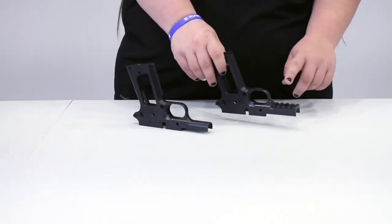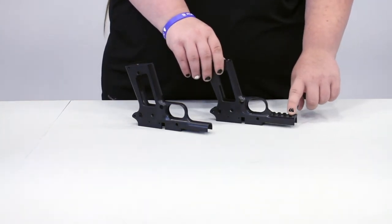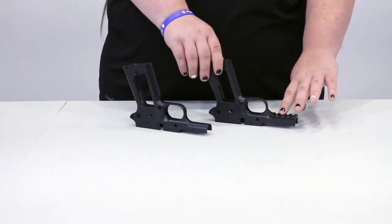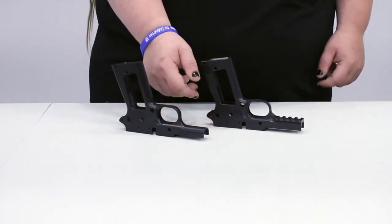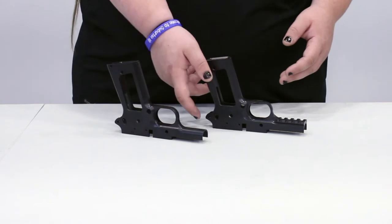So here we have a tactical green. It's got these rails here, you can put a flashlight on it or something. And then this one is standard, it has no rail on it.